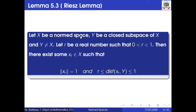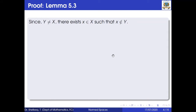So we have X a normed space, Y a proper closed subspace of X, and r a real number in between 0 and 1. Then there is an x_r in X with norm x_r equal to 1 and the distance of x_r from Y lying between r and 1. We want to prove this result. Proof.